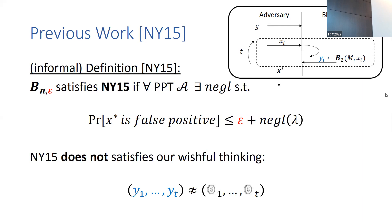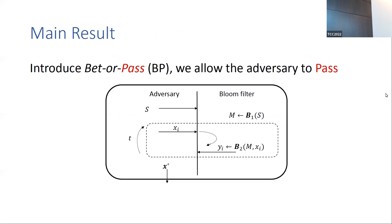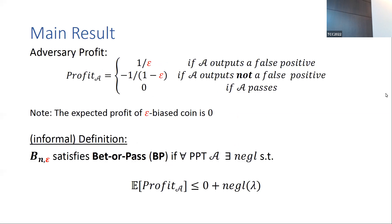We ask whether we can extend the NY definition and introduce a new notion called Better Pass (BP). In this test, instead of being forced to output an element, we allow the adversary to pass — she doesn't have to provide any output following the adaptive queries; she can either say 'this is a false positive' or say 'I don't know.' We define the adversary's profit: she gains 1/ε if she successfully outputs a false positive element, she gets penalized with 1/(1−ε) if her output element is a true negative, and her profit is zero if she chooses to pass.